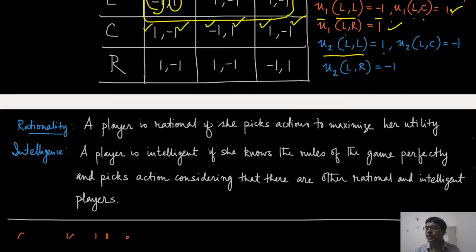Game theory uses two very important assumptions. The first assumption is rationality, which means that the player is rational if she picks the action to maximize her utility. In this game, the shooter and goalkeeper always try to pick the action that maximizes their utility. Intelligence, on the other hand, is a little circular in its definition - it says that the player is intelligent if she knows the rules of the game perfectly and picks actions considering that there are other rational and intelligent players. This is a very interesting definition, and as we will see more examples, the implication of intelligence means that people will behave in the way a game theorist will analyze the game.